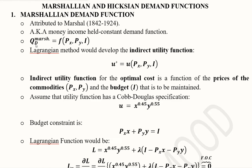As symbolically written, the demand function attributed to Marshall is basically a function of the prices of the goods and the money income.